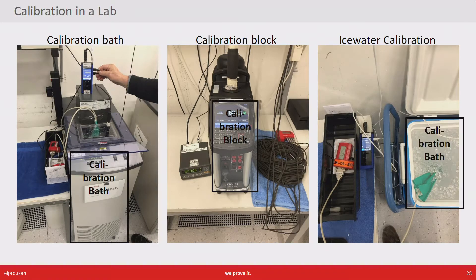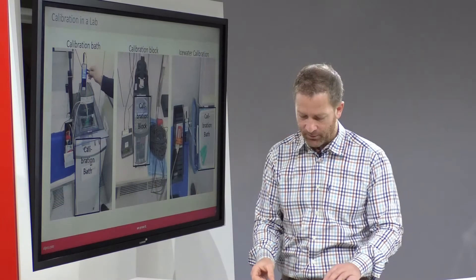The third example is the most simple and cheapest way of calibration: ice water. Ice water has the physical property that it is always exactly 0.00 degrees centigrade. Again, you can dip entire devices here because there is a lot of space inside this calibration bath.